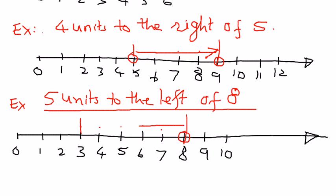We draw a line, and when we move 5 units from 8 to the left, where we end up is at the point indicating the number 3. So 5 units to the left of 8 is 3. This is how we represent numbers on the number line. In my next presentation, we shall see how to represent whole numbers using inequality symbols.